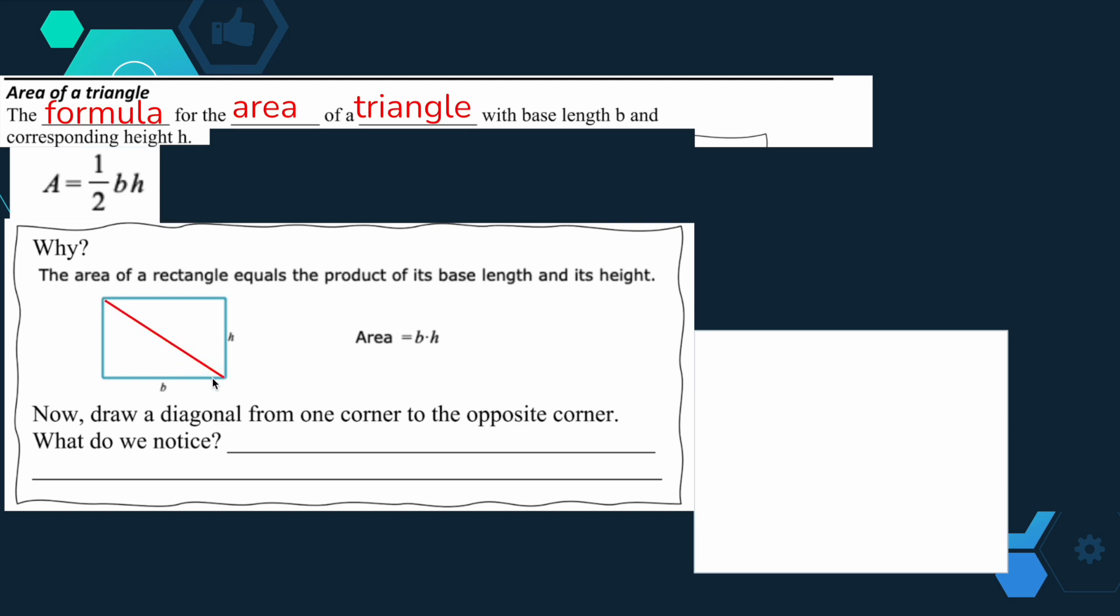If I cut that in half, though, if I draw a diagonal from one corner to the opposite corner, what do we notice? Well, hopefully we notice that it created two congruent triangles or it just cut it in half. So that's why it comes directly from a rectangle.